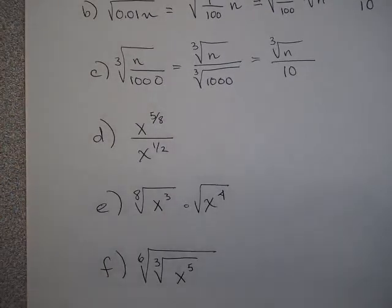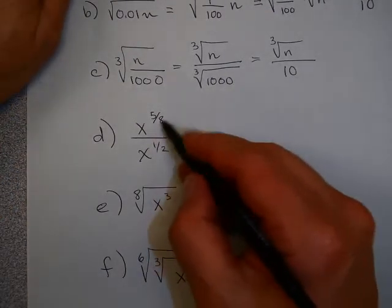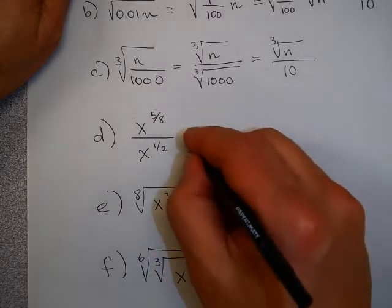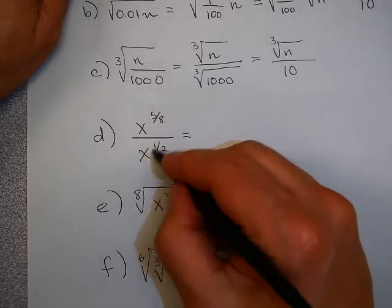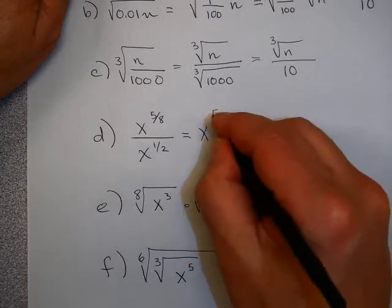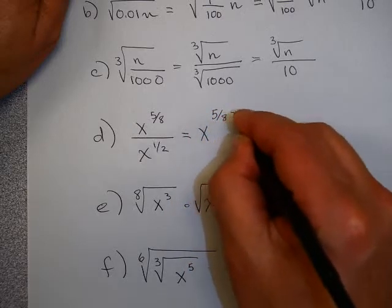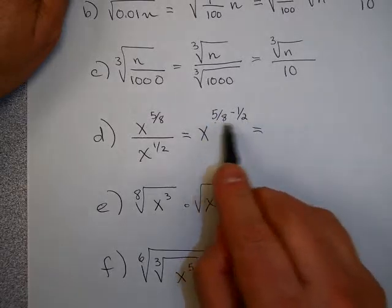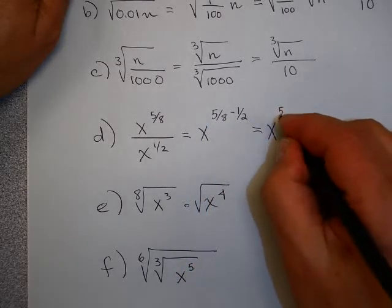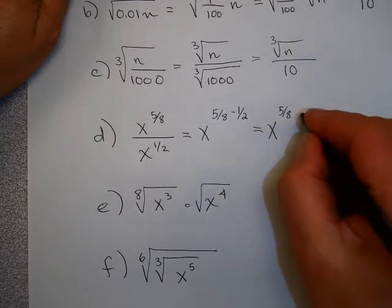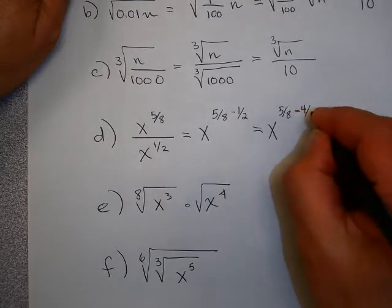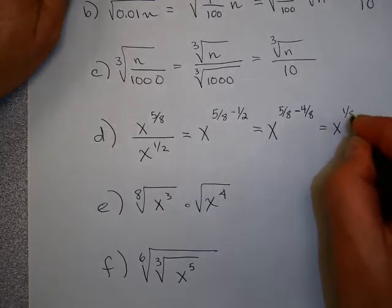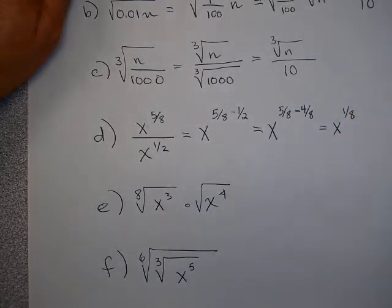These problems, however, it might be easier to use them as rational exponents. Here, we have x to the 5 eighths over x to the 1 half. Because these have the same base, I can subtract the exponents. Don't be afraid because these have different denominators. You find a common denominator. 1 half is 4 eighths. 5 eighths minus 4 eighths is x to the 1 eighth, or the 8th root of x.